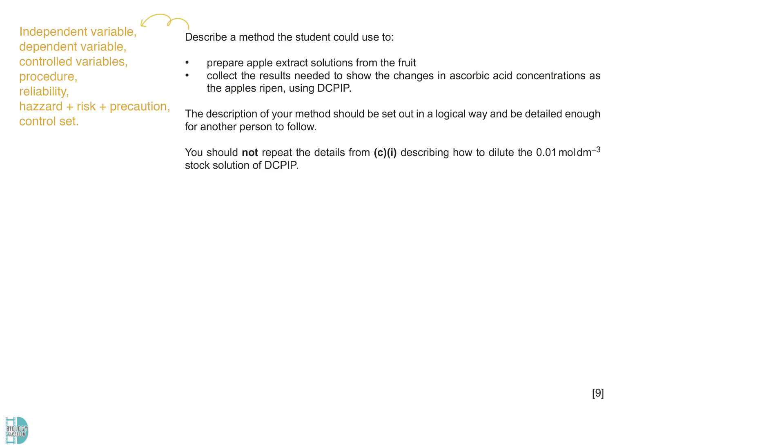The preparation of a control set is sometimes credited, so it is a good idea to include it. List down all the points you want to include, then arrange them in a logical sequence. In this investigation, the ripeness of apples is the independent variable, and the concentration of ascorbic acid is the dependent variable.